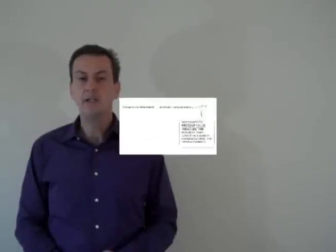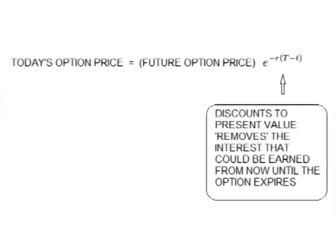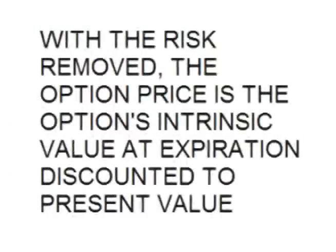We then have to consider the time value of money and discount the option to the present value. The time value of money is the risk-free rate, so we must discount the option to present value by continuously negatively compounding by the risk-free rate. Therefore, the price of an option with the risk removed is its intrinsic value at expiration discounted to present value.